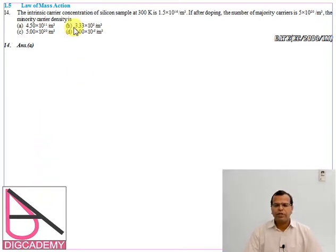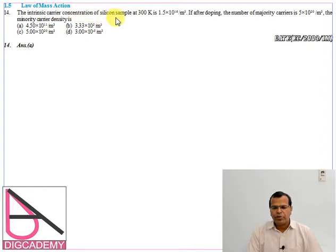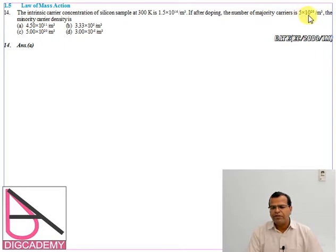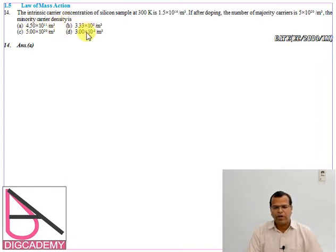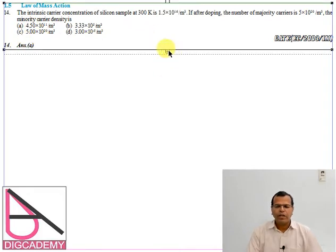The very first question was in GATE EC 2003. The intrinsic carrier concentration of a silicon sample at 300K is 1.5 × 10^16 per meter cube. If after doping the number of majority carriers is 5 × 10^20 per meter cube, the minority carrier concentration is — you are given four options. The answer is option A, and now let us look at the solution.